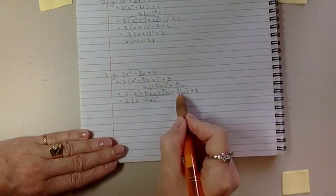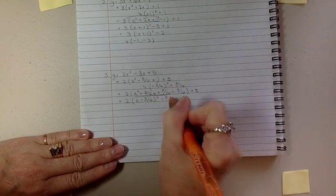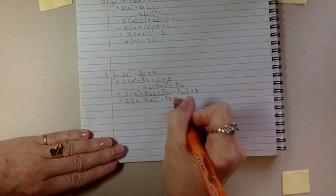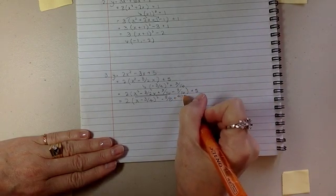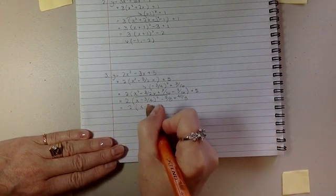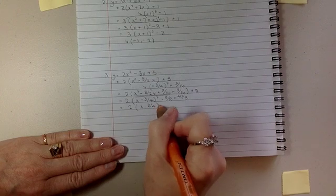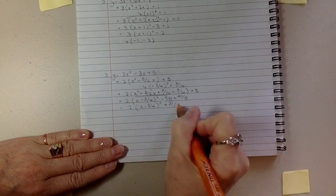2 multiplied into here is going to give me negative 9 over 8 plus 5 is 40 over 8, or you could just use your calculator. Equals 2 bracket x minus 3 quarters and bracket squared plus 31 over 8.